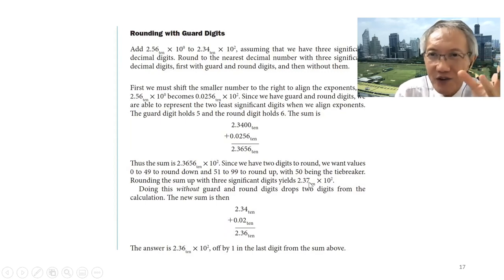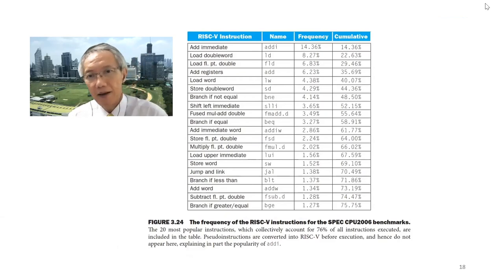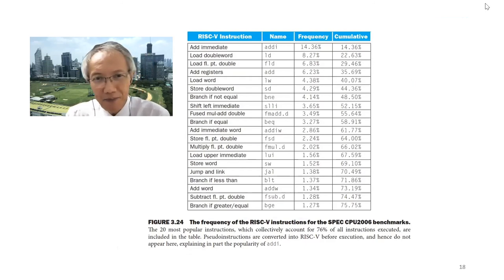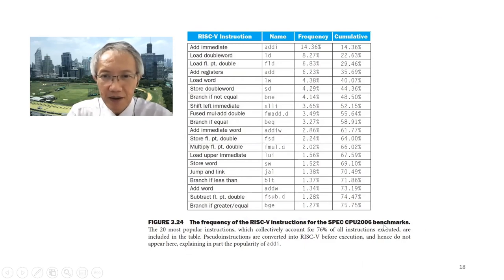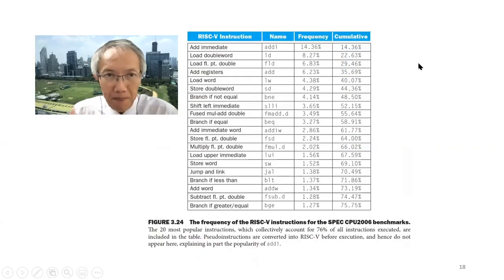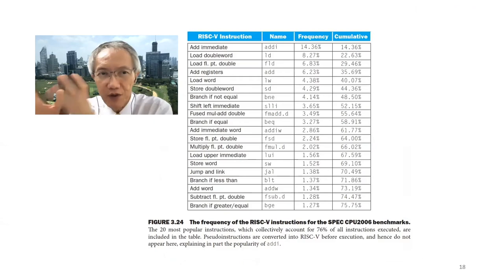Now let me go through all the details about the instructions of a processor, including arithmetic. Have you ever wondered which instructions are mostly used in a normal program? This table shows a RISC-V processor running the CPU SPEC 2006 benchmark, and the statistics collected from those benchmarks show the frequency of instruction types.